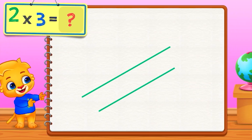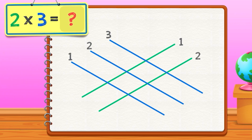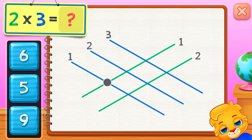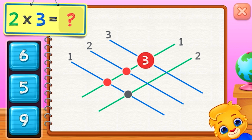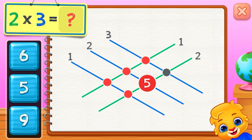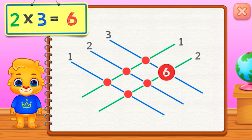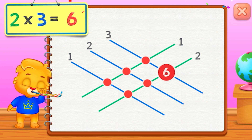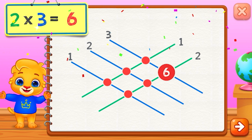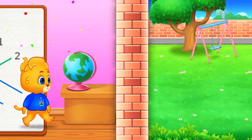2 times 3 equals — 1, 2, 3, 4, 5, 6. 2 times 3 equals 6.